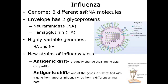Antigenic shift is different from drift. This is when two different flu viruses — often one that infects humans and one that infects animals — both go into the same host, and their RNA recombines to create a brand-new virus. It's not a change in a virus; it's a recombination of genetic material from two different viruses.